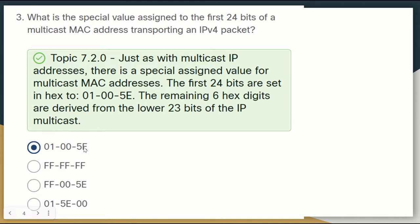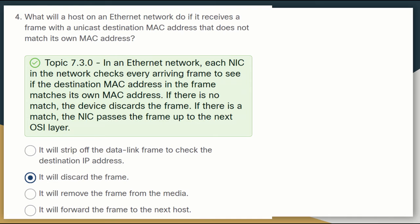Question four: what will a host on an Ethernet network do if it receives a frame with a unicast destination MAC address that does not match its own MAC address? In an Ethernet network, the NIC checks every arriving frame to see if the destination MAC address matches its own. If there is no match, the device discards the frame. If there is a match, the NIC passes the frame up to the next OSI layer. So if the MAC address does not match, the host will discard the frame.